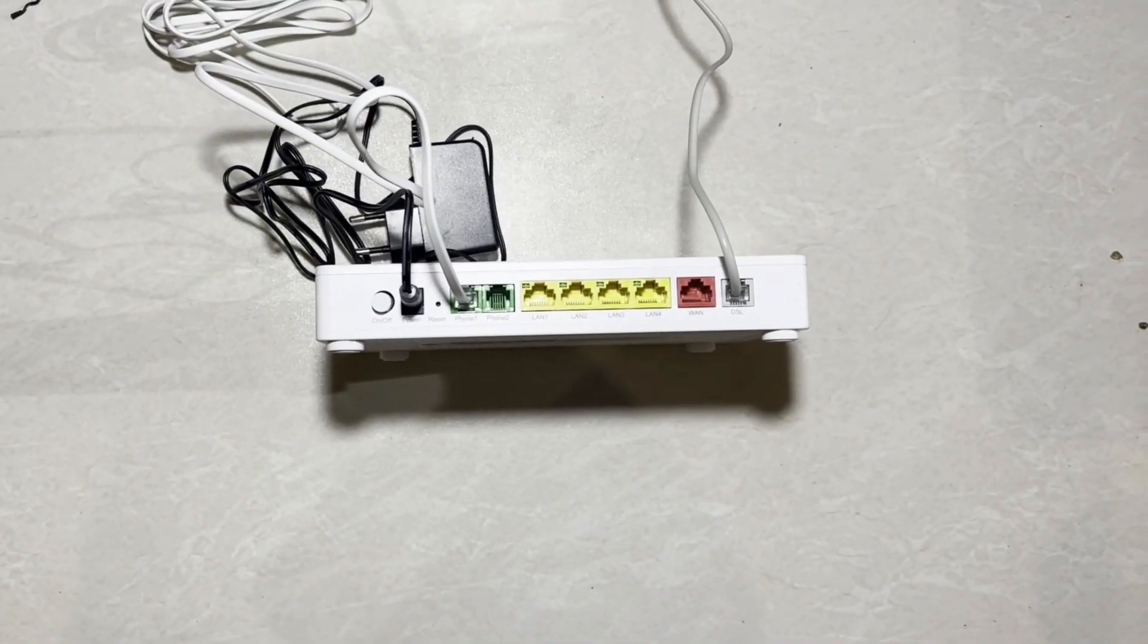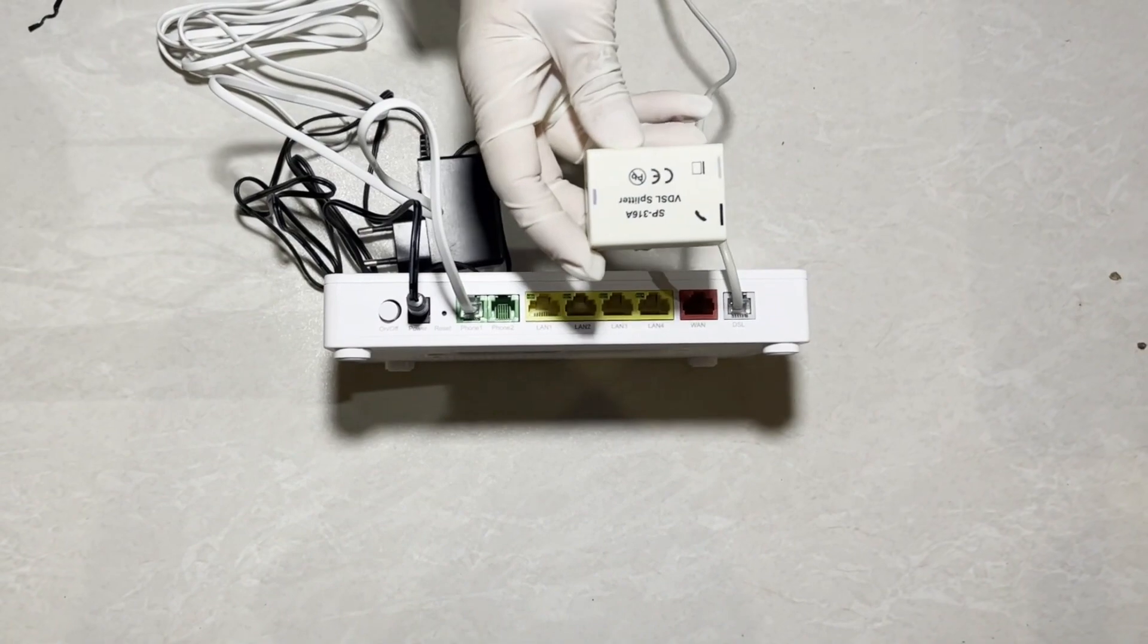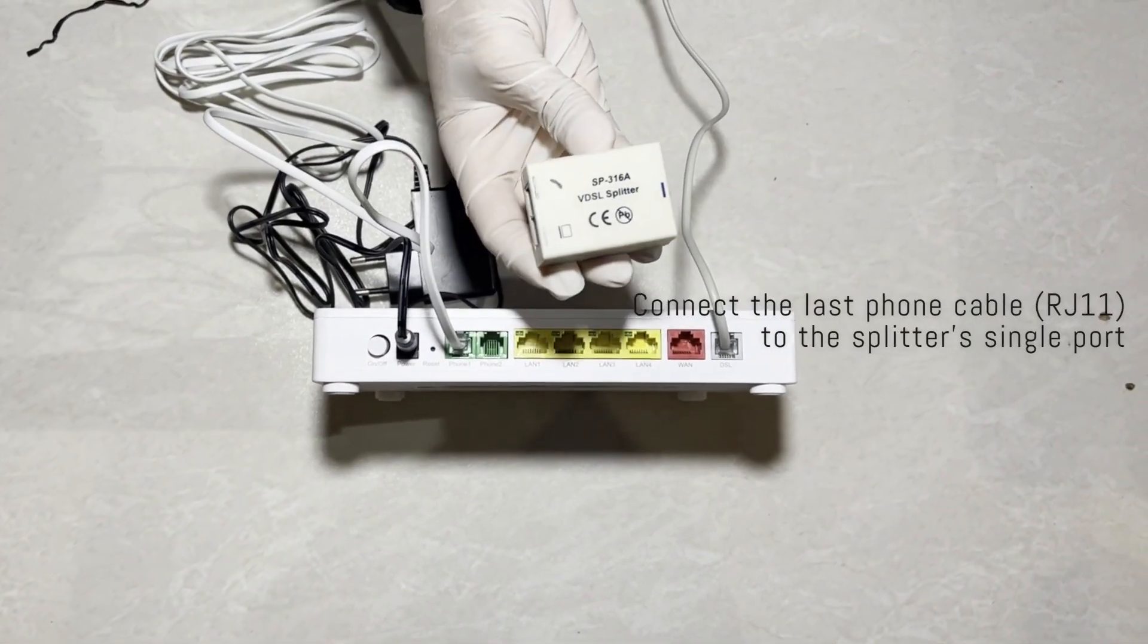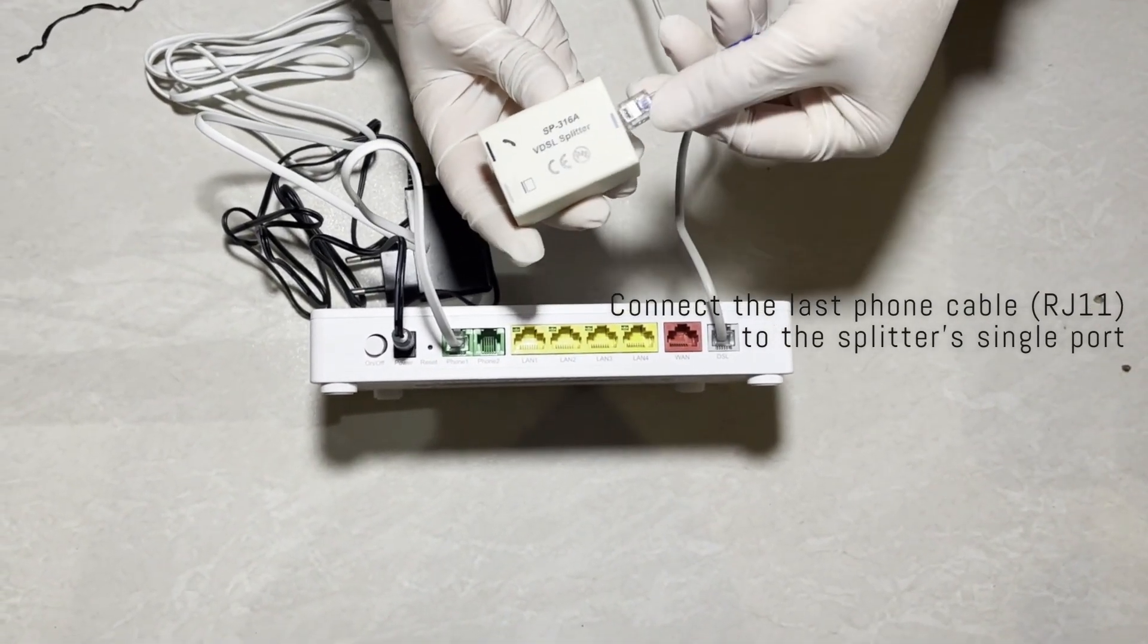Now let's bring the VDSL splitter. Connect a third phone cable to the splitter's single port.